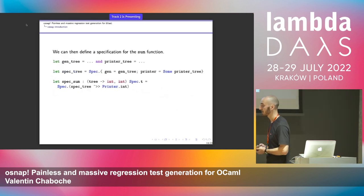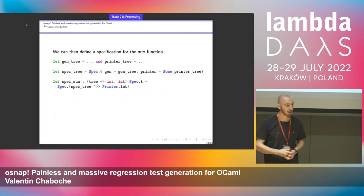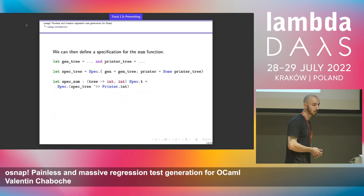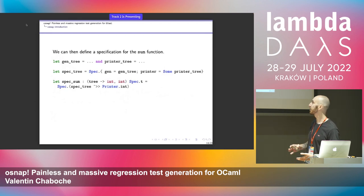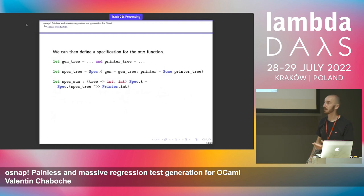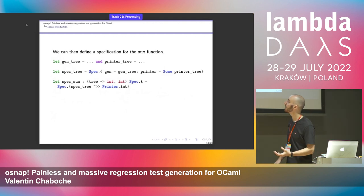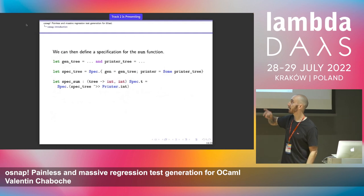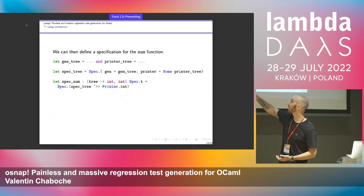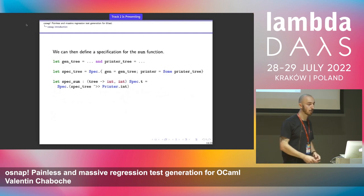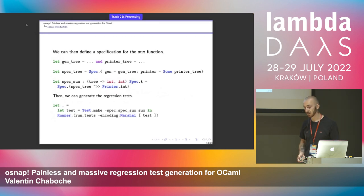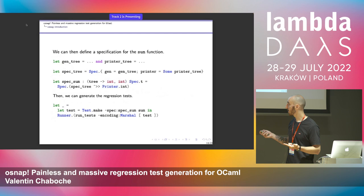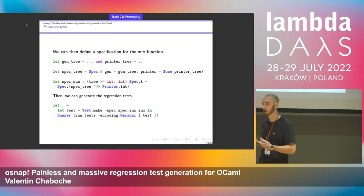Coming back to Bill's example and the sum function: if we want to create a specification for sum, we first write a generator for the inputs and a printer. With those, you create a spec for the tree type. Then you create a spec for the function sum — a spec of a tree into a printer of integers. Now you have the specification, you have the function, you combine them into a test, and you have a runner that can create the scenarios.